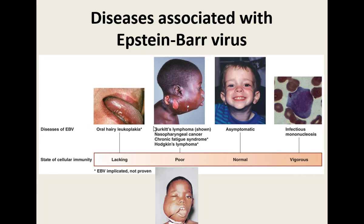In immunocompromised individuals with no working immune system, EBV can cause rare diseases. One is oral hairy leukoplakia — almost a cancer that can happen around the tongue, causing indentations that make it look unusual. For those with a poor or deficient immune system, it can cause Burkitt's lymphoma (cancer of the lymph nodes), nasopharyngeal cancer, chronic fatigue syndrome, and Hodgkin's lymphoma. These are all people that are already immunocompromised.